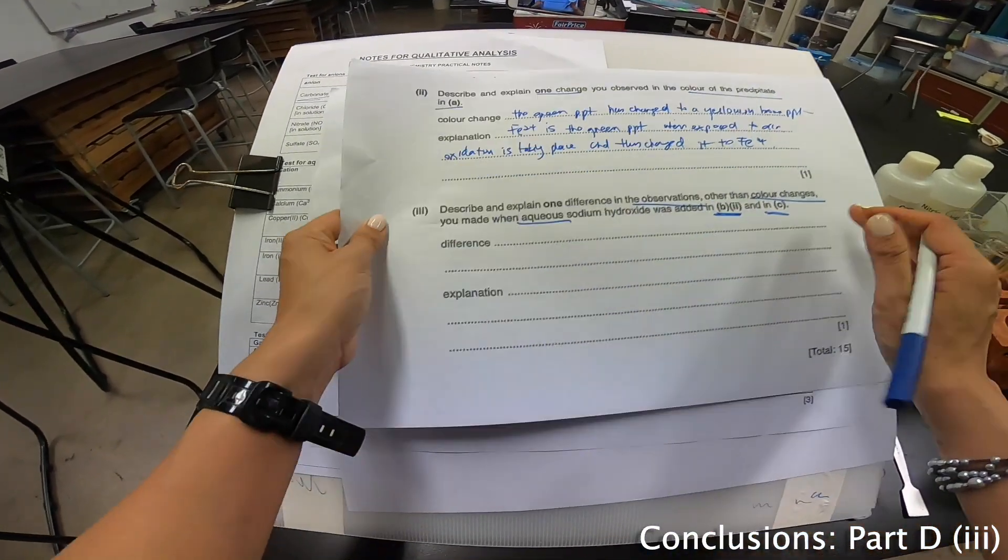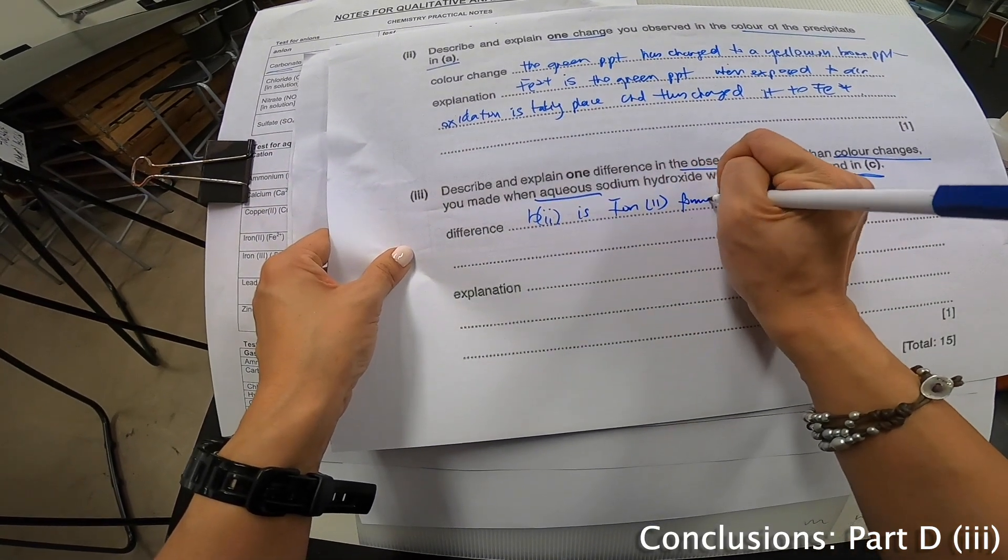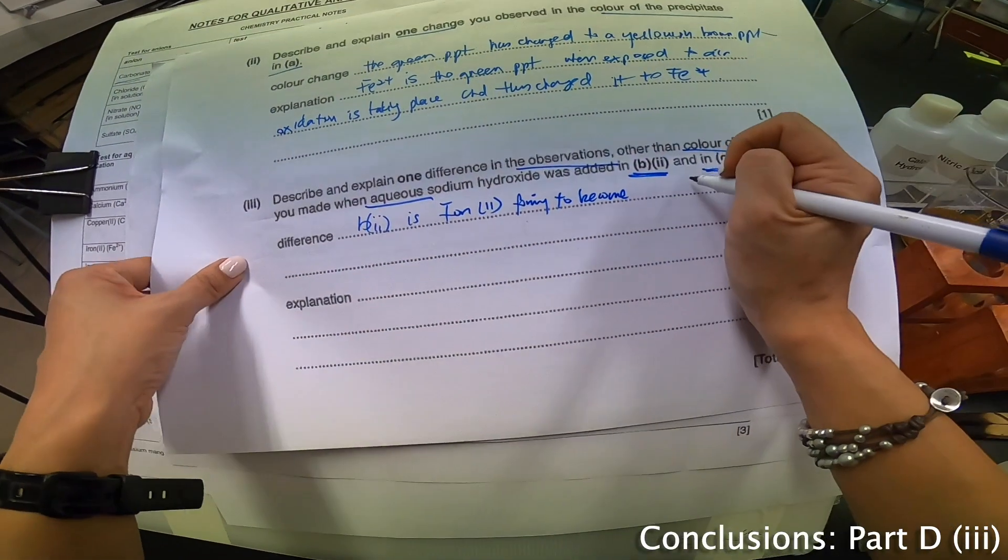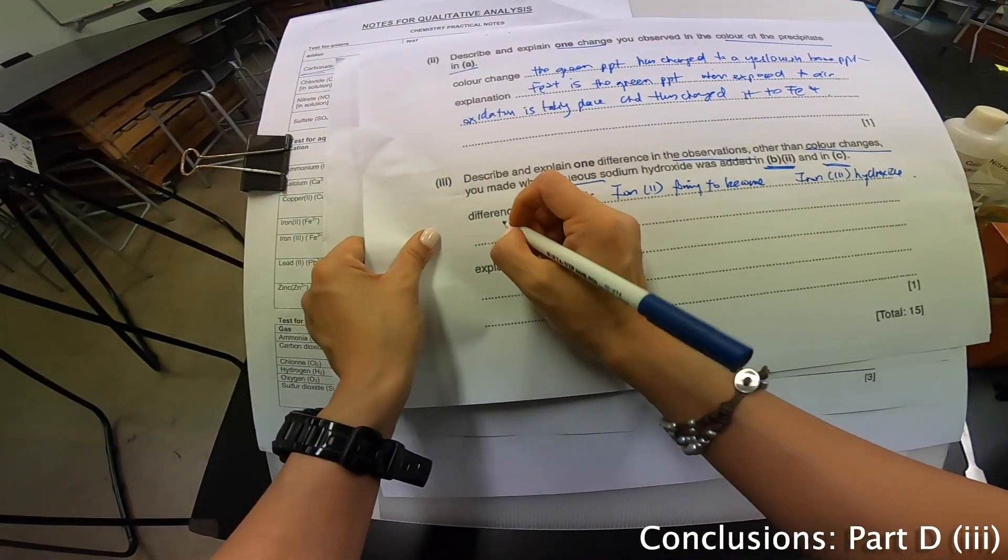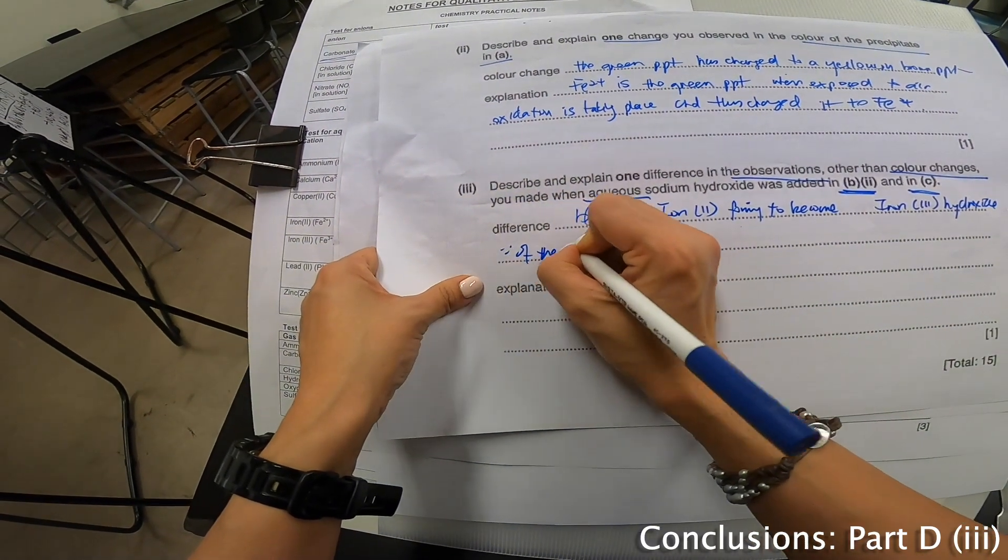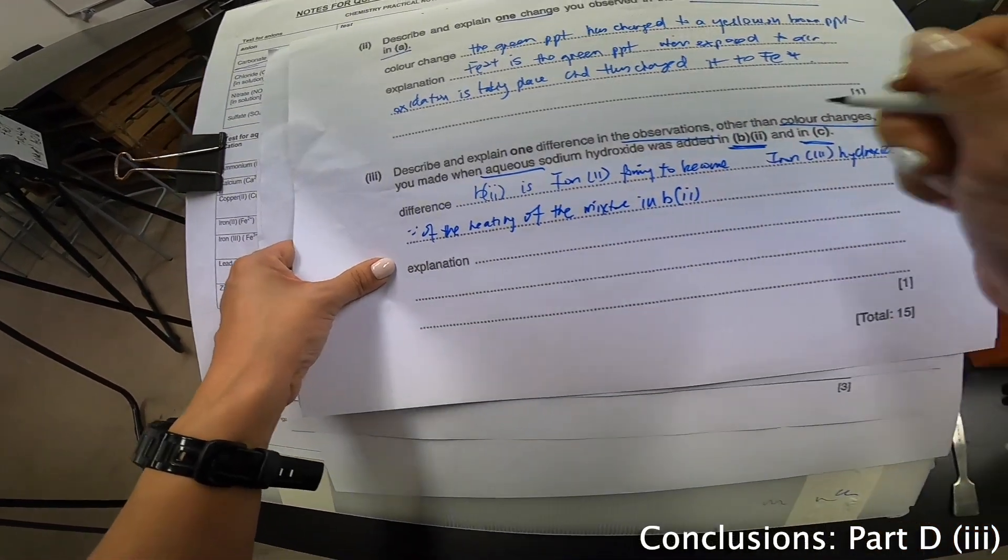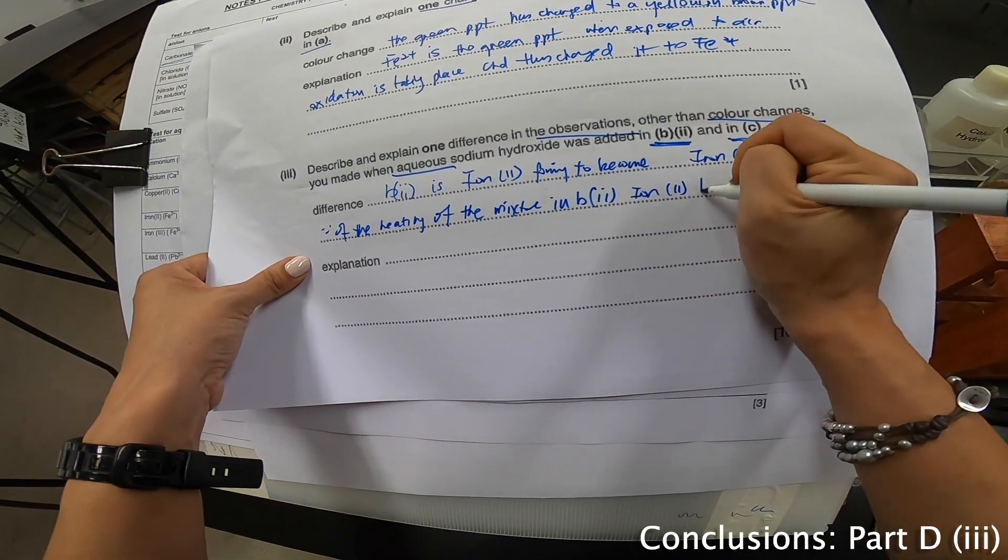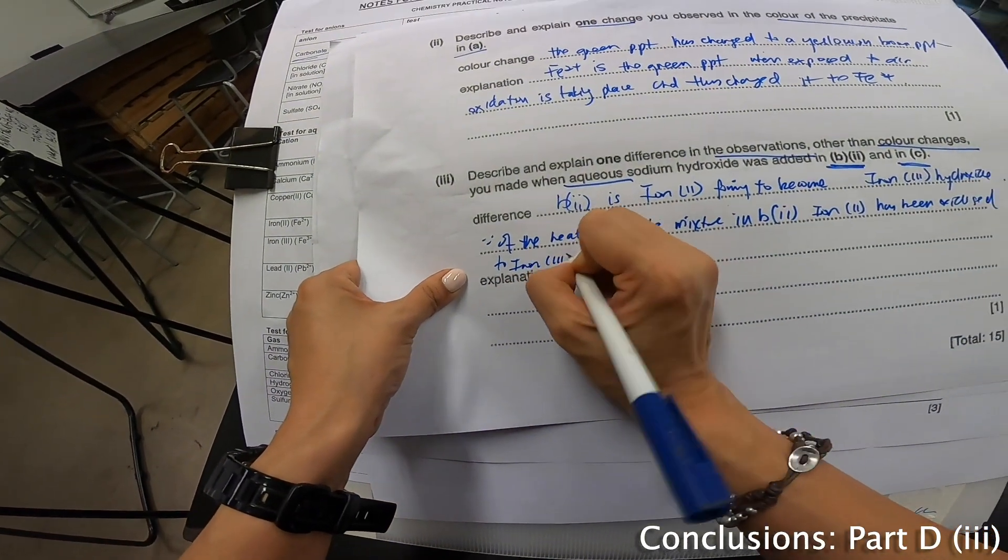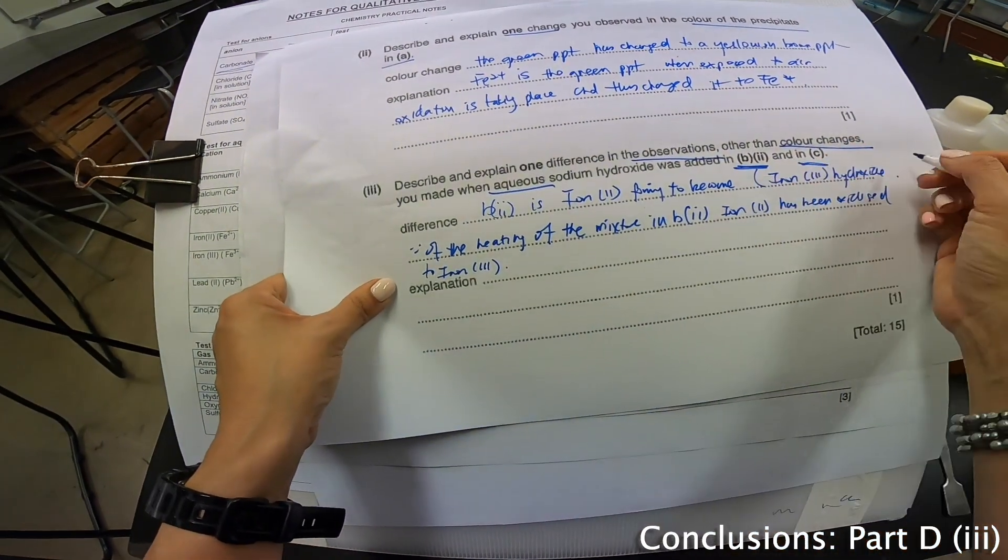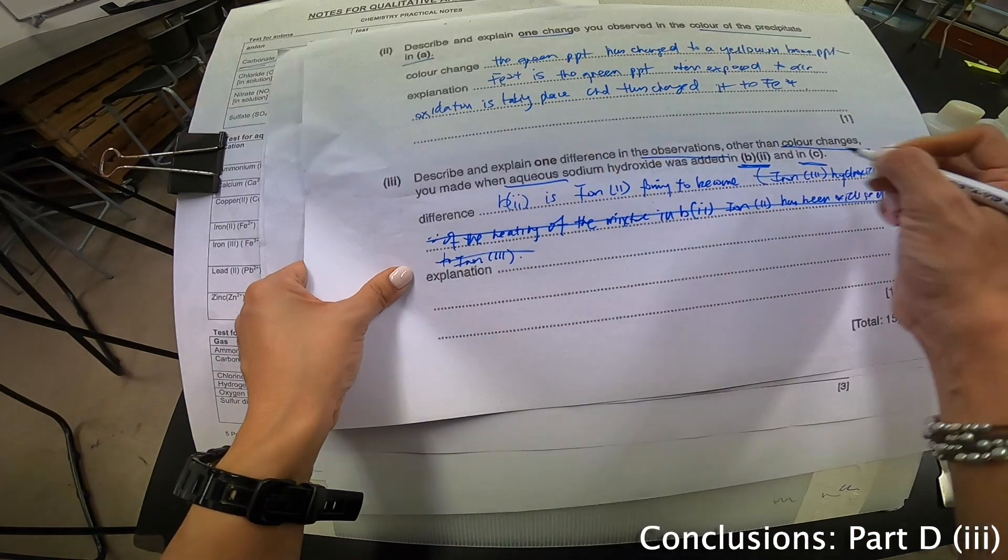So, I can see the difference. B part 2 is iron 2 forming to become iron 3 hydroxide. Because of the heating of the mixture in B part 2, iron 2 has been oxidized to iron 3. Oh, the explanation is supposed to be here. Sorry. So, I shouldn't write it over at this part here. I should write it here. So, let me do a quick change. Explanation.